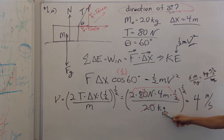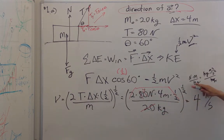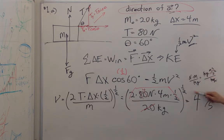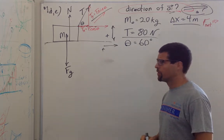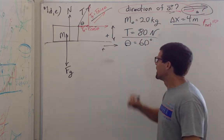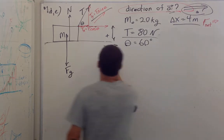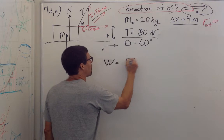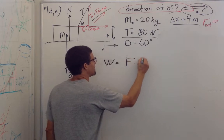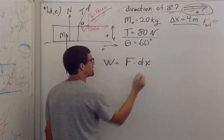That's newton-meters per kilogram, and that should come to meters squared per second squared — but we took the square root. The reason the energy theorem doesn't work for the next part is because work is equal to force dot dx.